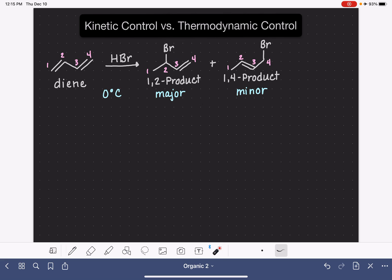Even though the 1-4 product is more thermodynamically stable because it is a more substituted diene, at cold temperatures it is our minor product.